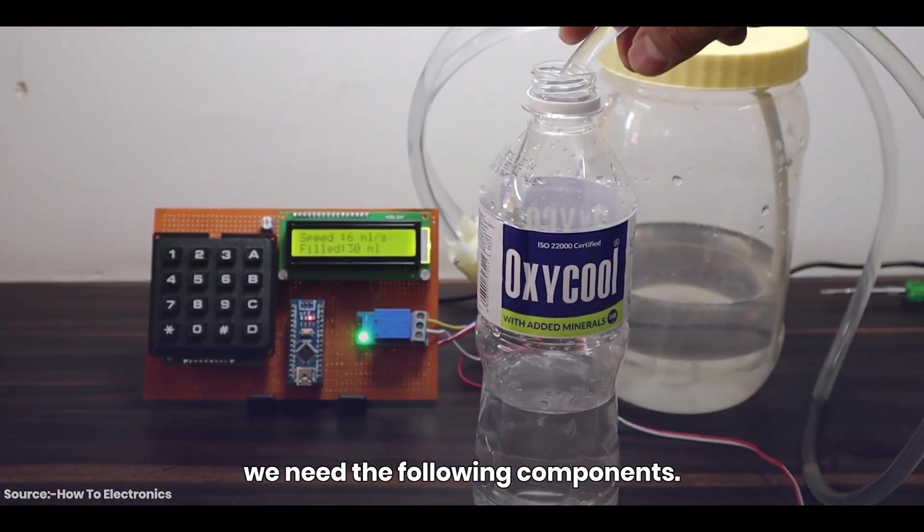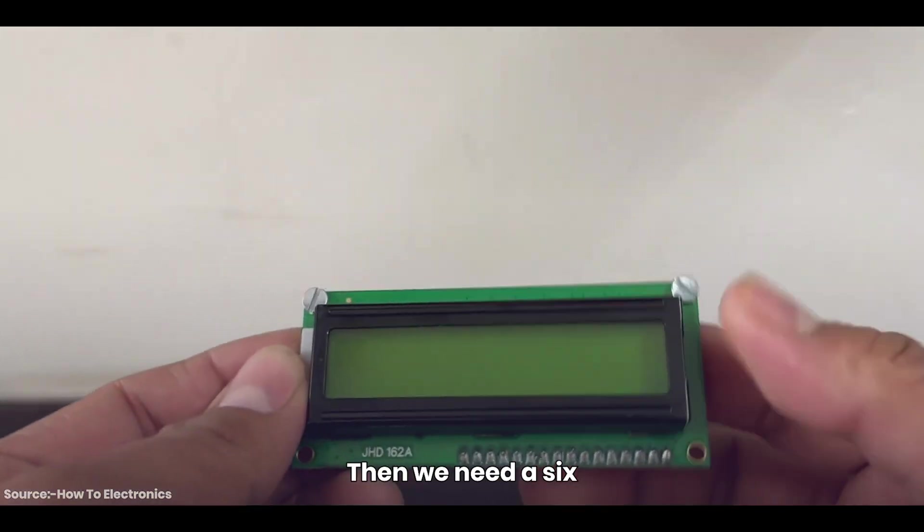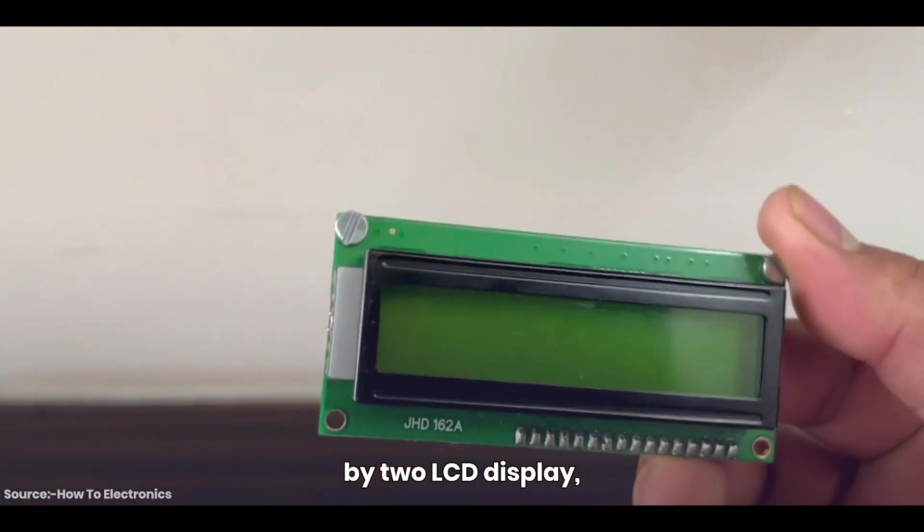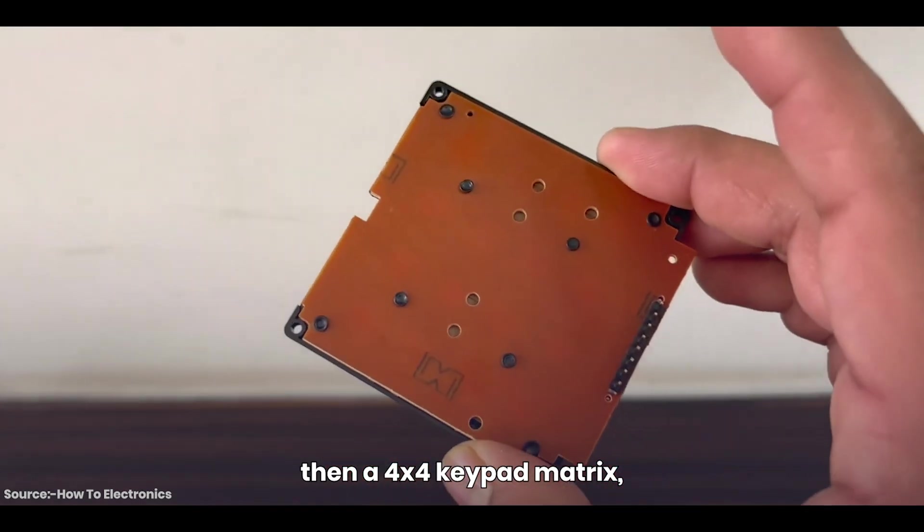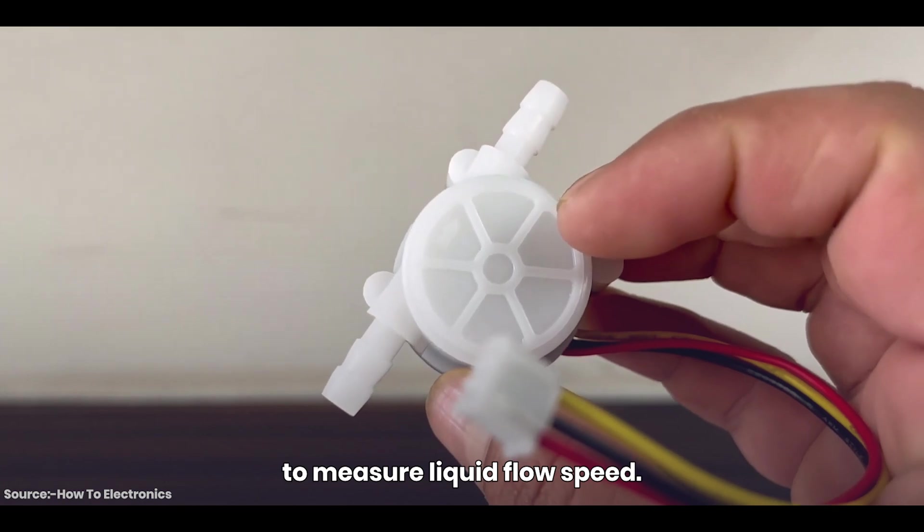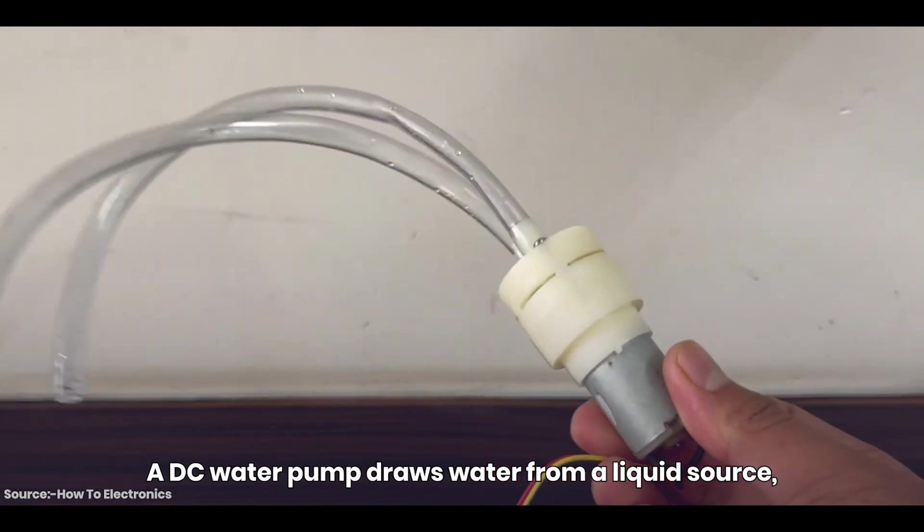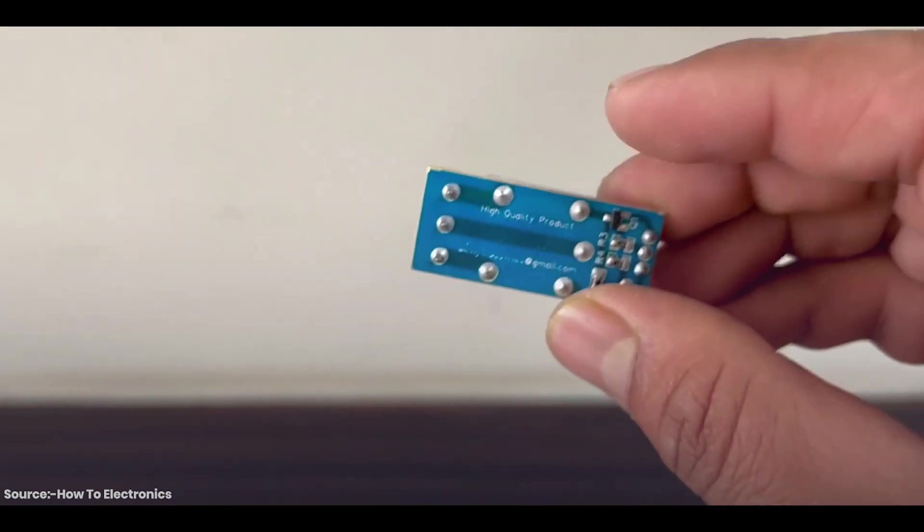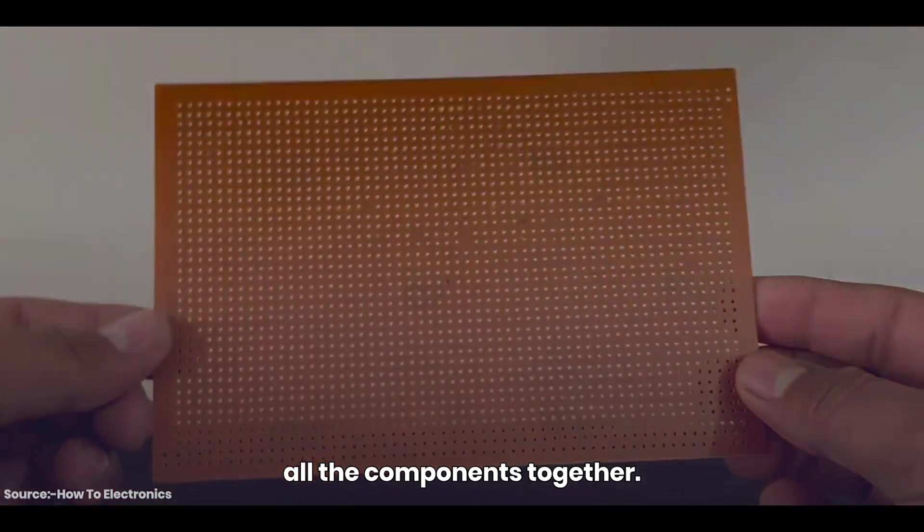To build this project we need the following components. First we need an Arduino Nano microcontroller board, then we need a 16 by 2 LCD display, a 10K potentiometer, then a 4 by 4 keypad matrix. A Hall effect water flow sensor to measure liquid flow speed, a DC water pump draws water from a liquid source, a 5-volt single channel relay module, and a zero PCB board for assembling all the components together.